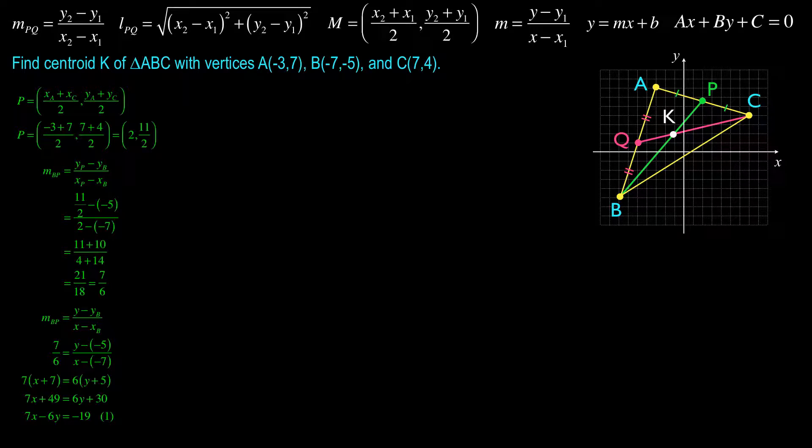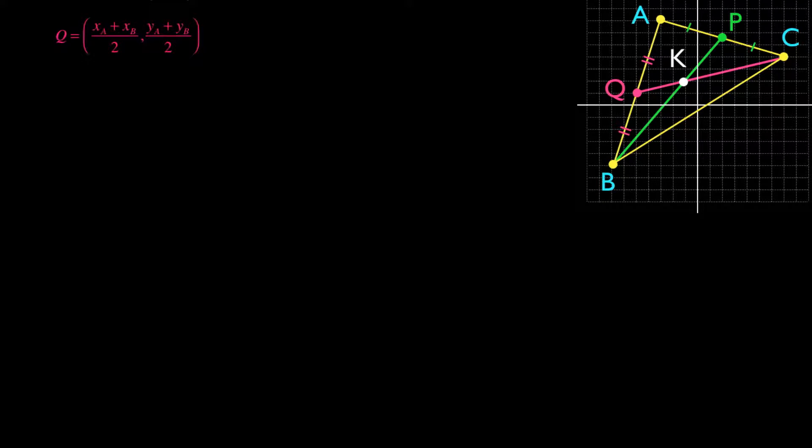Now I'm going to proceed and do the same process for the line passing through C and Q. So it follows exactly the same way. I first establish that I need to find point Q using the midpoint formula. I then substitute in my values for A and B, the X value for A, the X value for B, the Y value for A, the Y value for B, and I get coordinates for Q that are negative 5 and 1.